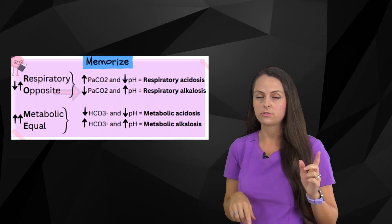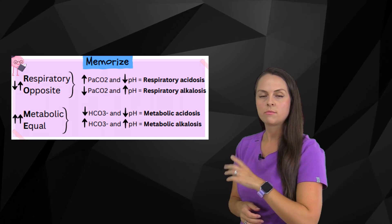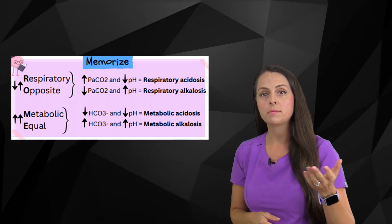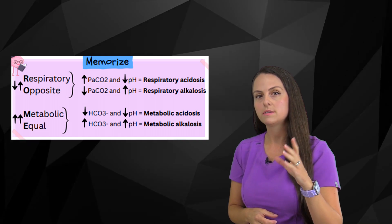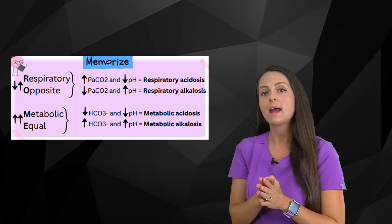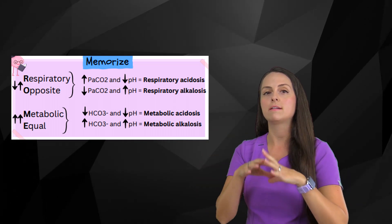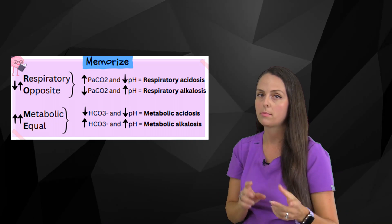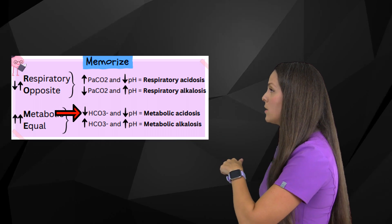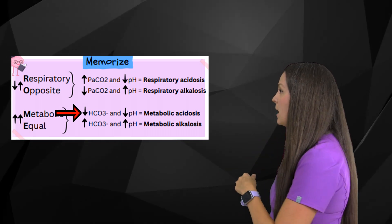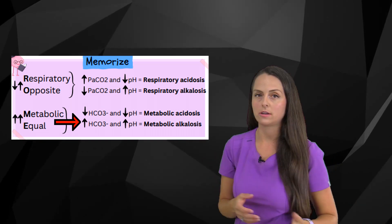Now let's look at M and E — metabolic equal. With metabolic we're talking about the bicarb, the HCO3. For this part of the method, the bicarb and the blood pH have to be equal, meaning they're going in the same direction — both high or both low — and if that's happening we have a metabolic problem. For instance, a low bicarb and a low blood pH means metabolic acidosis, or a high bicarb and a high blood pH means metabolic alkalosis.